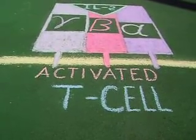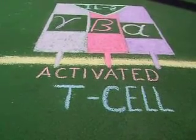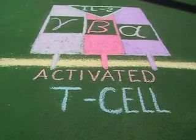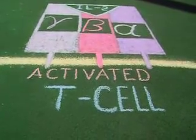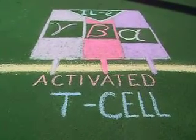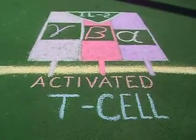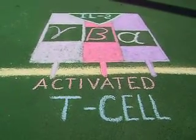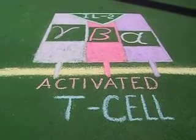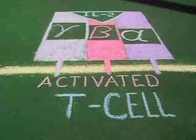Resting T-cells express a form of this receptor composed of beta and gamma chains, which binds interleukin-2 with moderate affinity, allowing resting T-cells to respond to very high concentrations of interleukin-2. Association of the alpha chain with the beta and gamma chains creates a receptor with a much higher affinity for interleukin-2, allowing the cell to respond to very low concentrations of interleukin-2.